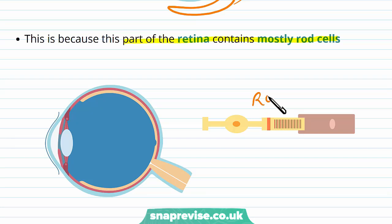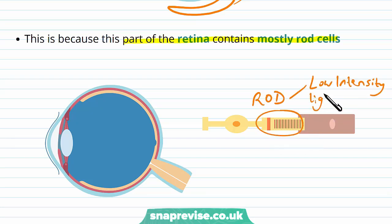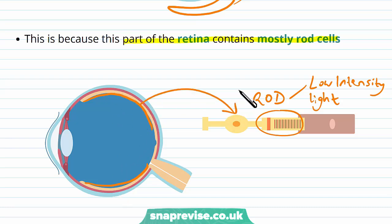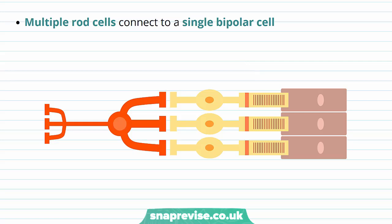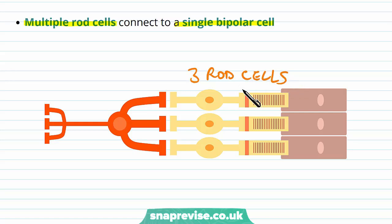Rod cells, named because of their rod shape, are for low-intensity light and mainly for black and white colours. These areas around the periphery — the top, bottom and sides — are mainly rod cells. Rod cells are known to have a poorer resolution. As mentioned in the previous video, multiple rod cells connect to one single bipolar cell — for example, three rod cells sending their information via synapses to one single bipolar cell.